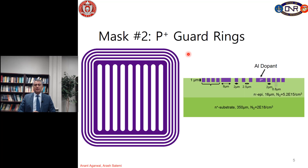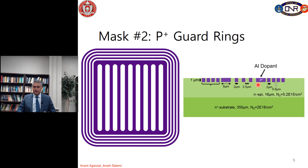The second mask involves forming P+ guard rings. On the left-hand side is the top view of the device and on the right is the cross-sectional view. We have the substrate with the 16-micrometer drift layer from epitaxial growth. The P+ regions are formed within the drift layer — you can see the P+ regions in the active area, and the guard rings are on the periphery of the active area in the termination region.